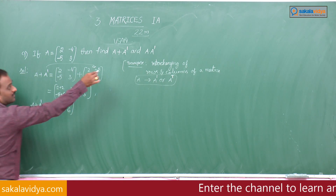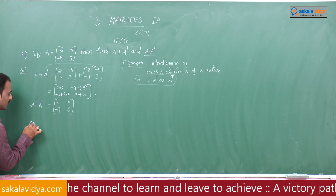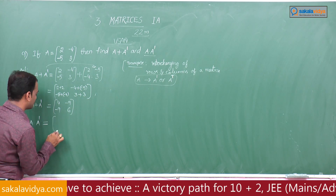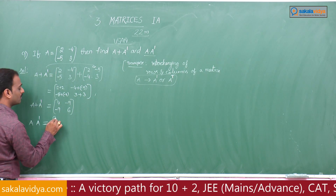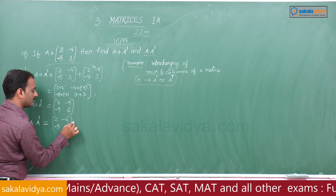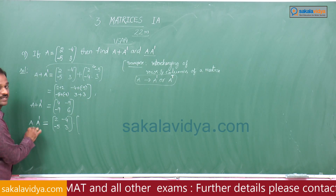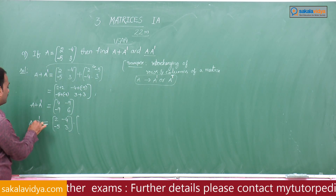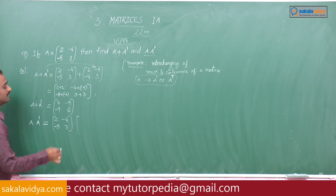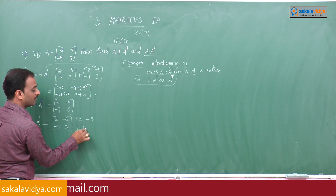Next, A into A dash — the product of these two matrices. Given matrix A equals [[2, -4], [-5, 3]] into A dash, which is the transpose matrix, that is [[2, -5], [-4, 3]].